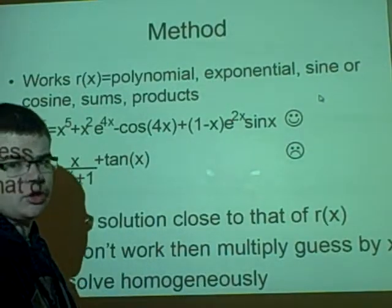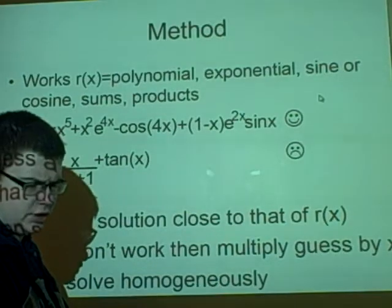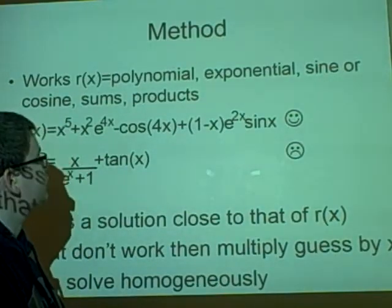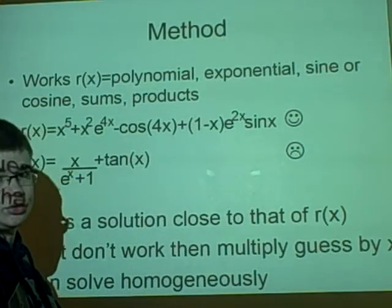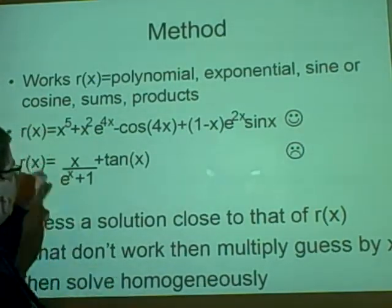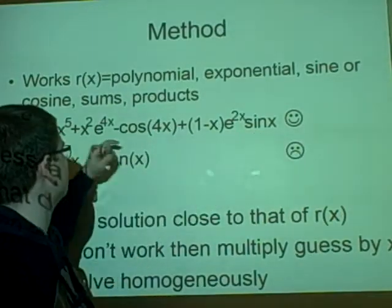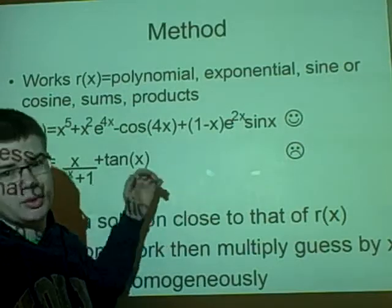Now this method only works if the thing at the end, the independent variable, is a polynomial, an exponential, sine or cosine, a sum or a product. So anything like this we're happy to solve, as long as it isn't this all together.